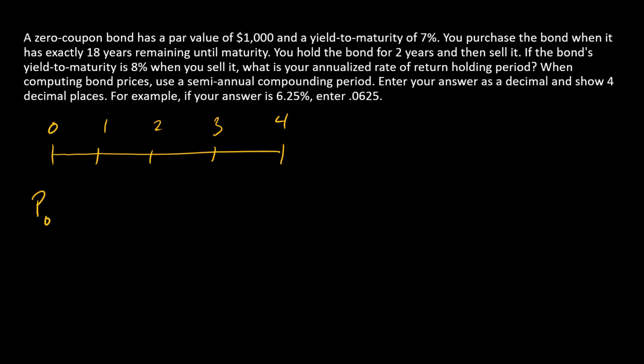At time zero, the investor is going to purchase the bond for some number P0. First step: let's calculate P0. What does the investor initially pay for the bond? When the bond is initially purchased, it has 18 years remaining to maturity, so thinking about a semi-annual timeline, there's 36 ticks on it. Zero-coupon bond, so the only payment is the $1,000 par repayment.